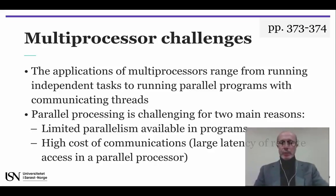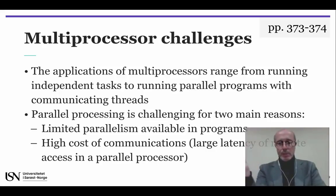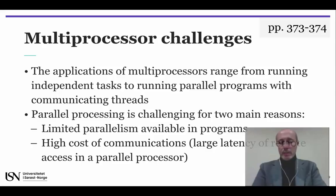There are two main challenges faced by parallel processing. The first is the limited parallelism available in programs, and the second is the relatively high cost of communications due to large latency of remote access. The communication of data between separate cores may cost 35 to 50 clock cycles, and among cores on separate chips anywhere from 100 to more than 300 clock cycles.